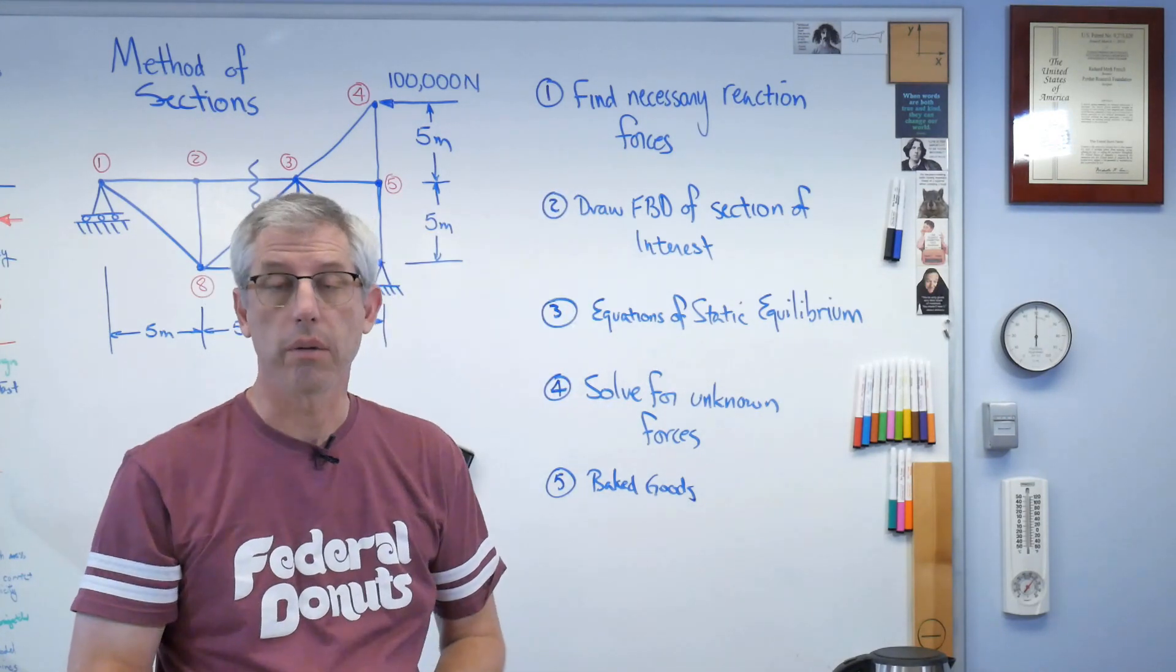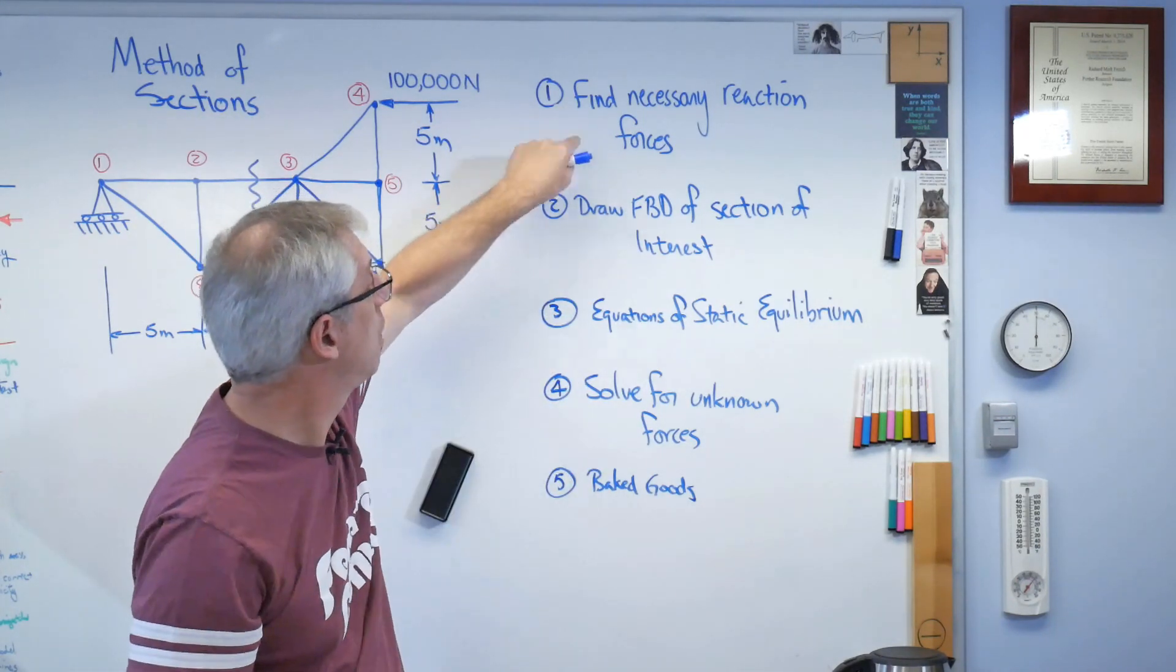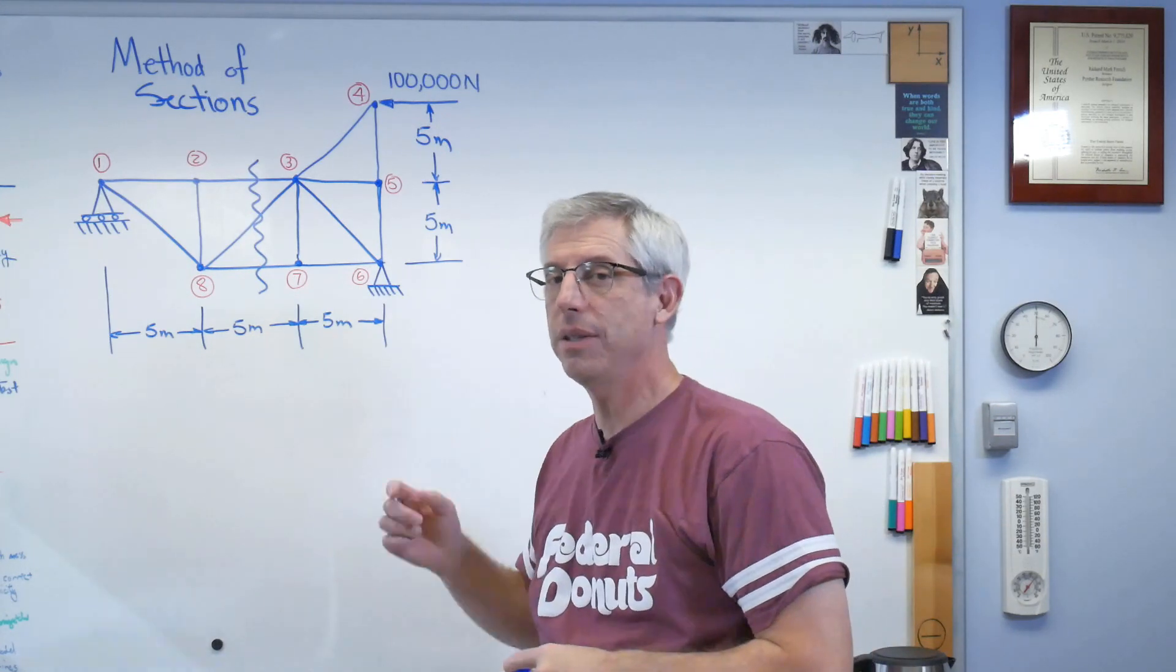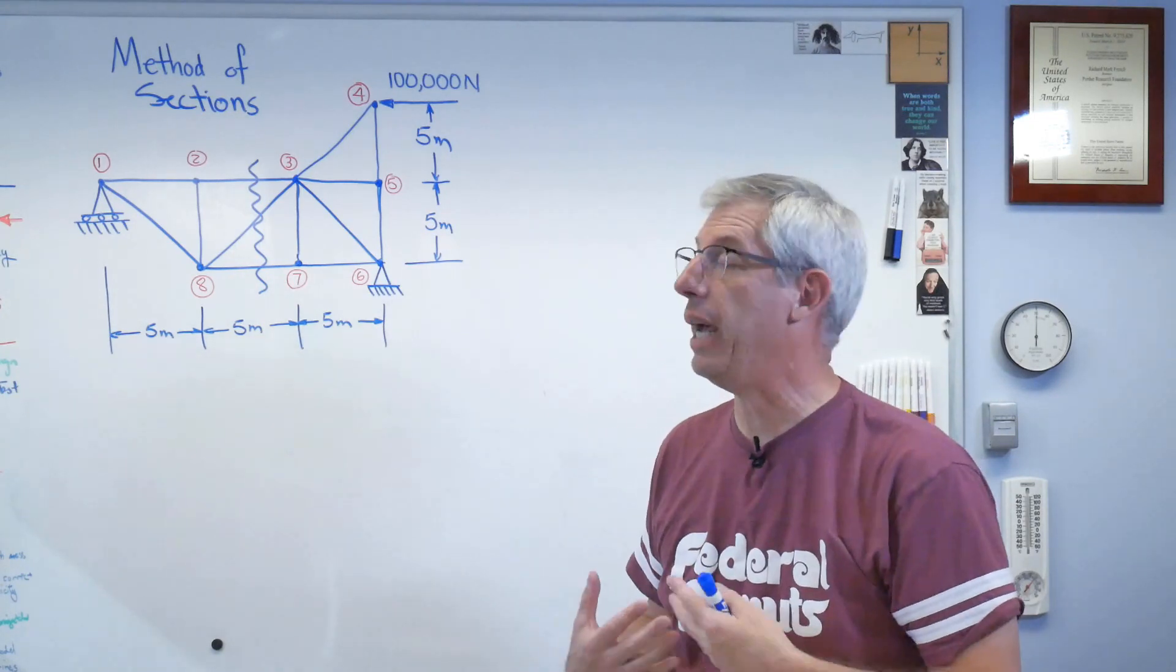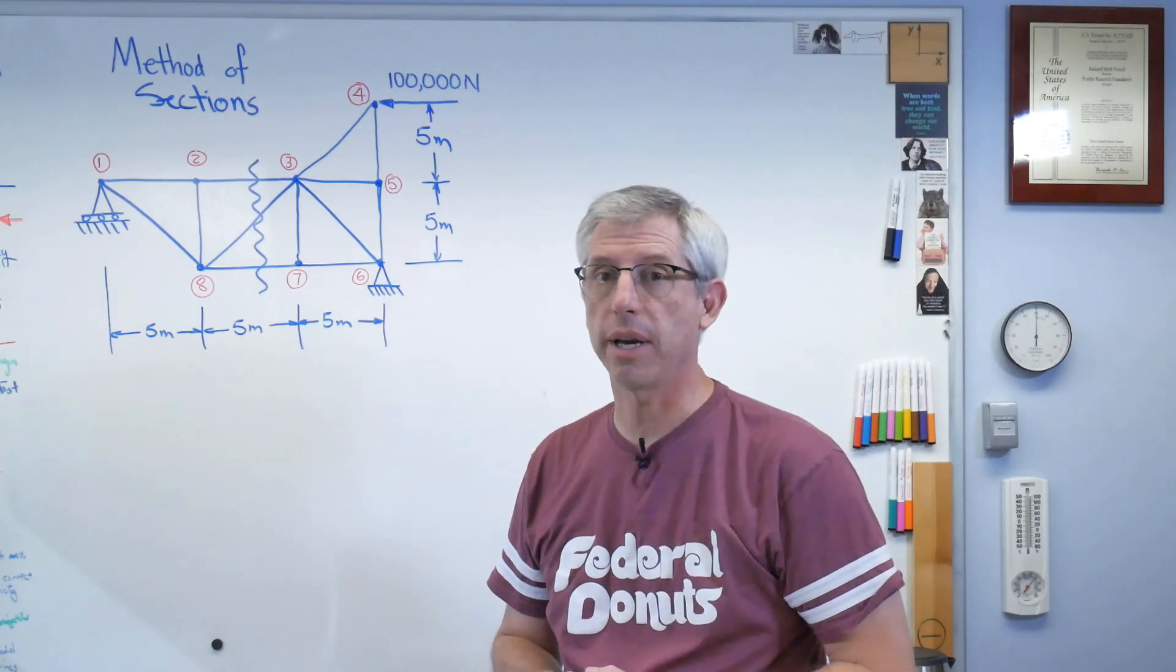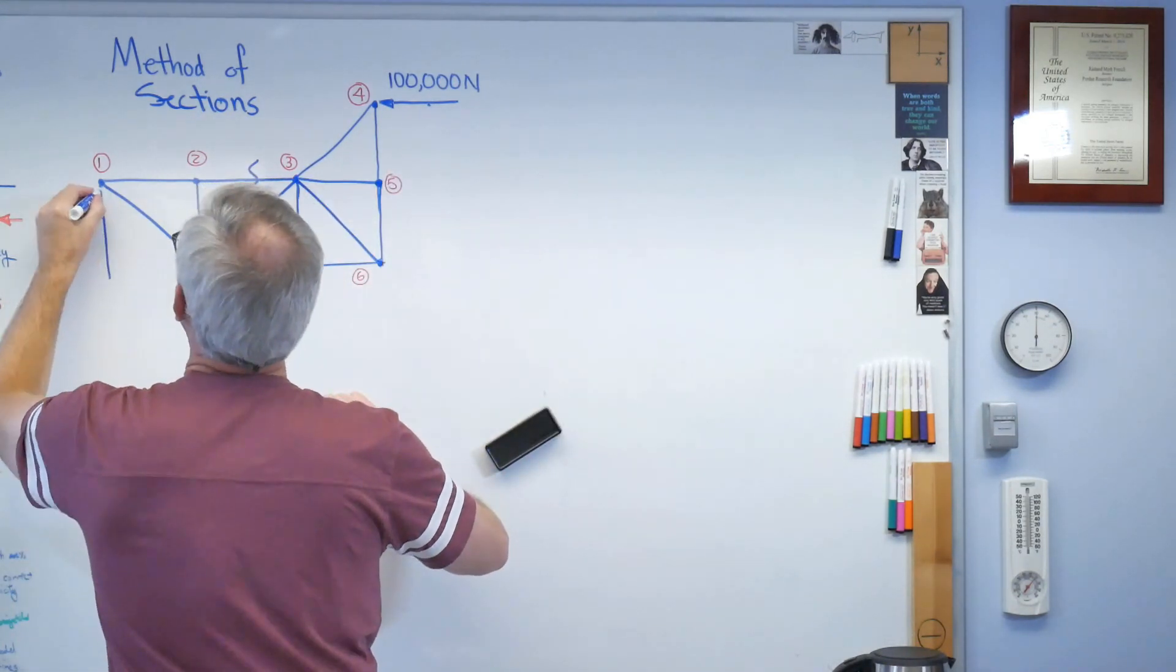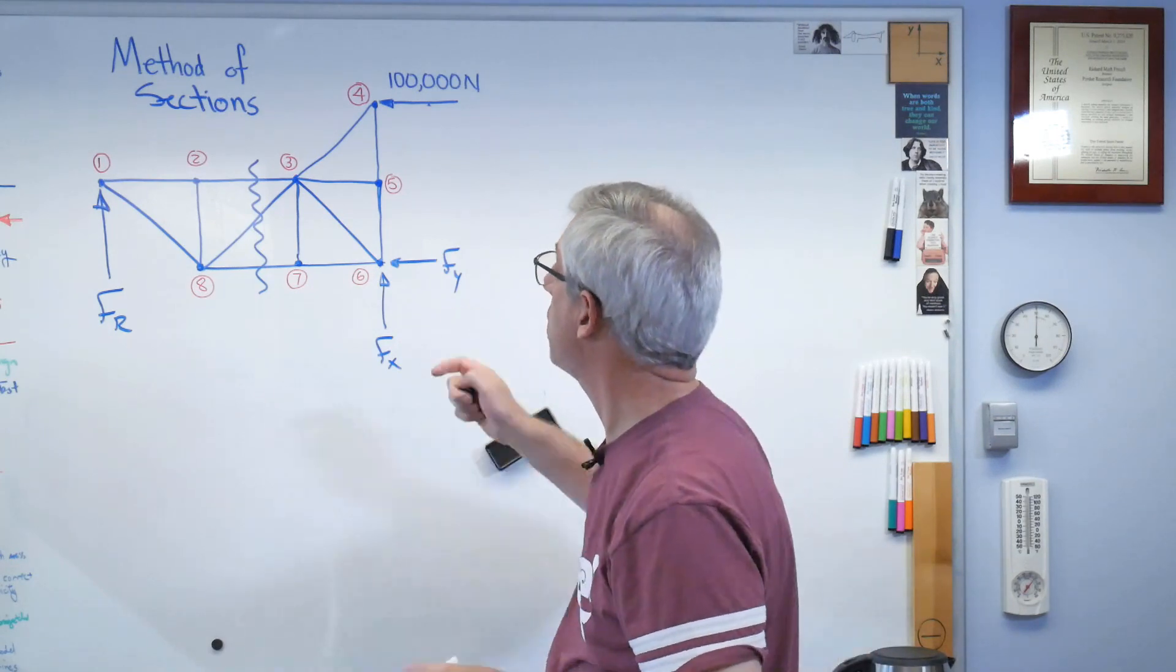With our recipe written out, let's get started. I'm going to erase this because I need the room to work. We're going to start with finding the necessary reaction forces. This isn't really a free body diagram. This is a working diagram. There's no forces on it, and it's not free. It hasn't been cut loose from its supports. Let's turn this into a free body diagram. Here's our free body diagram now.